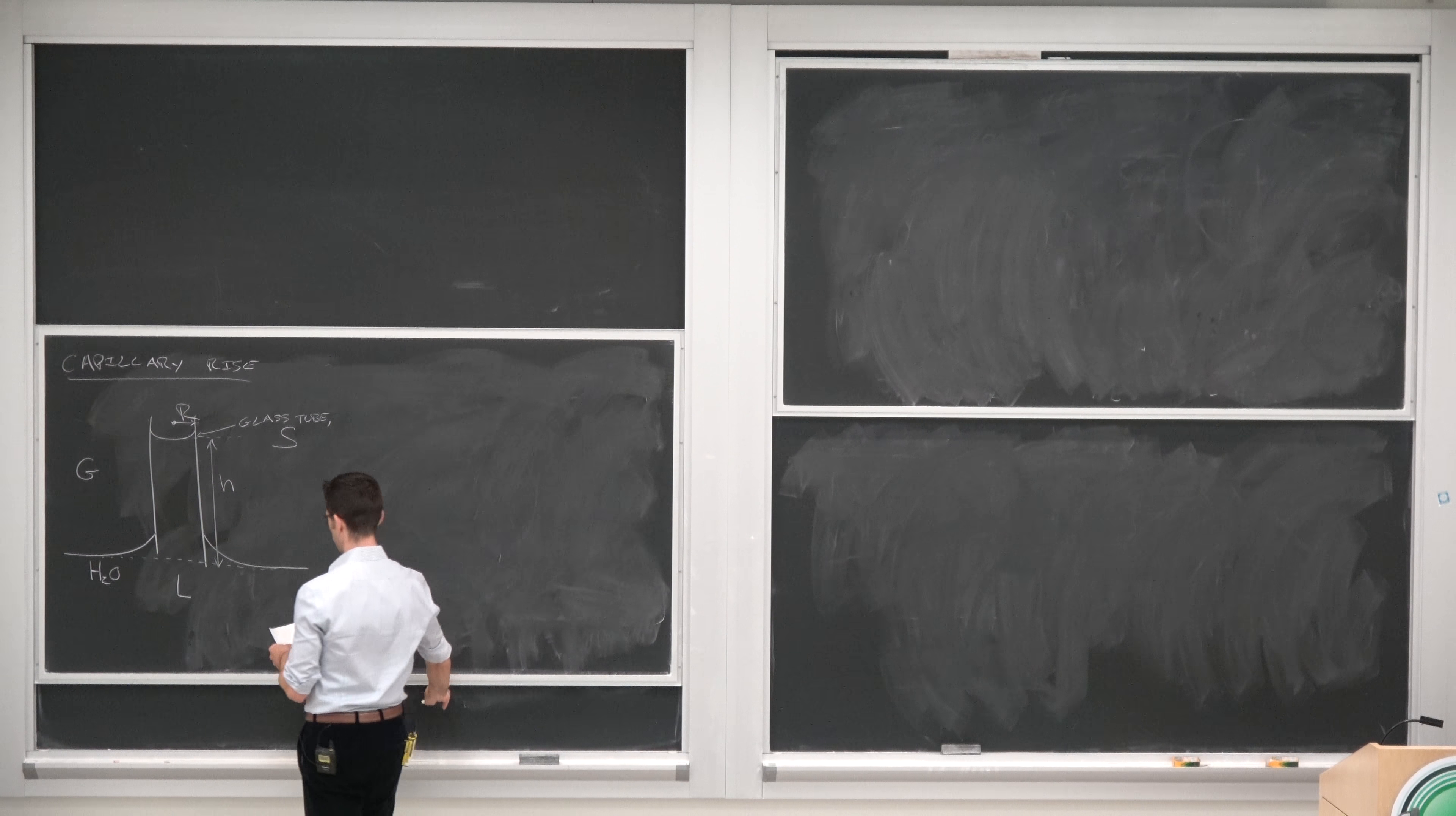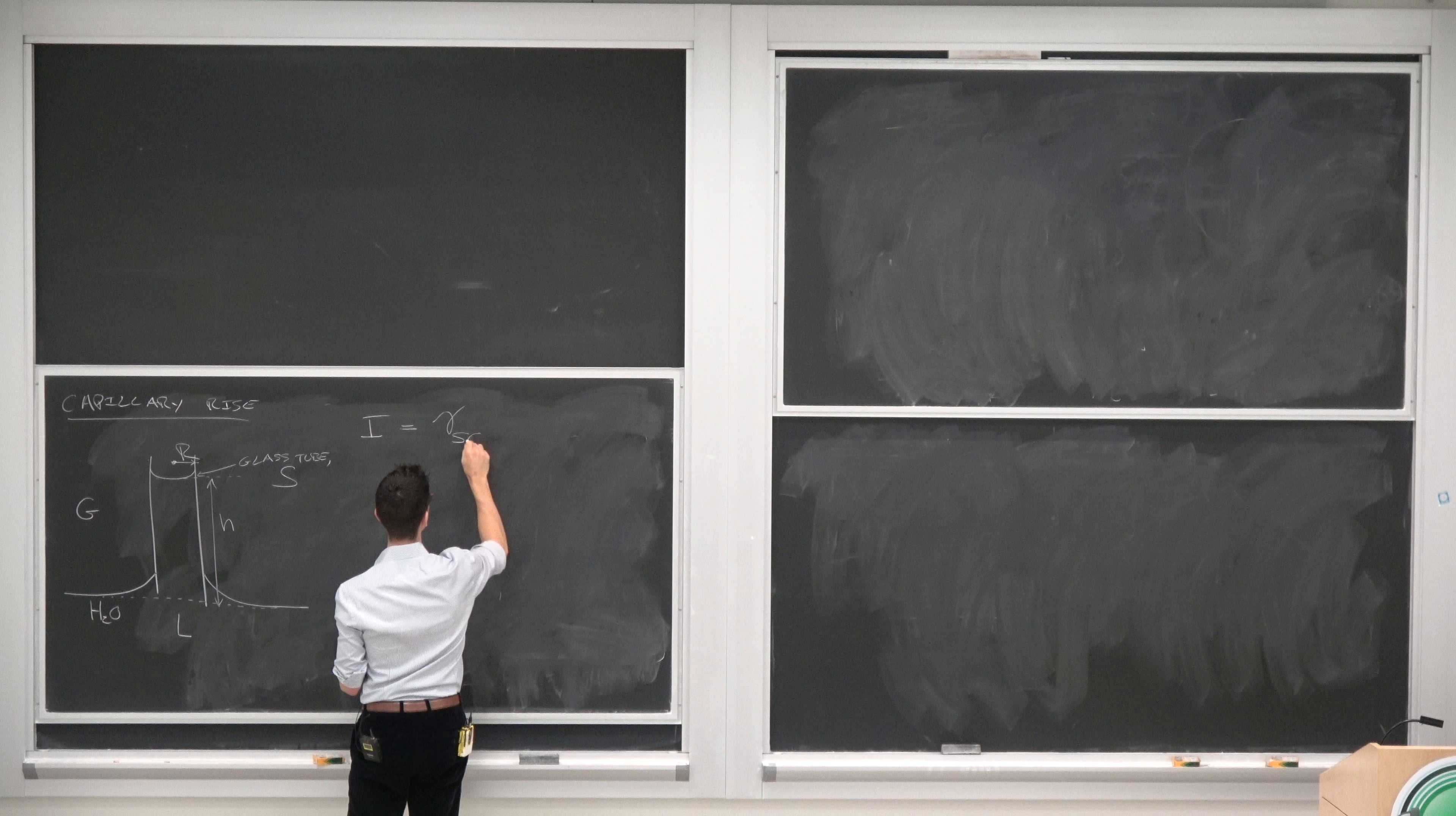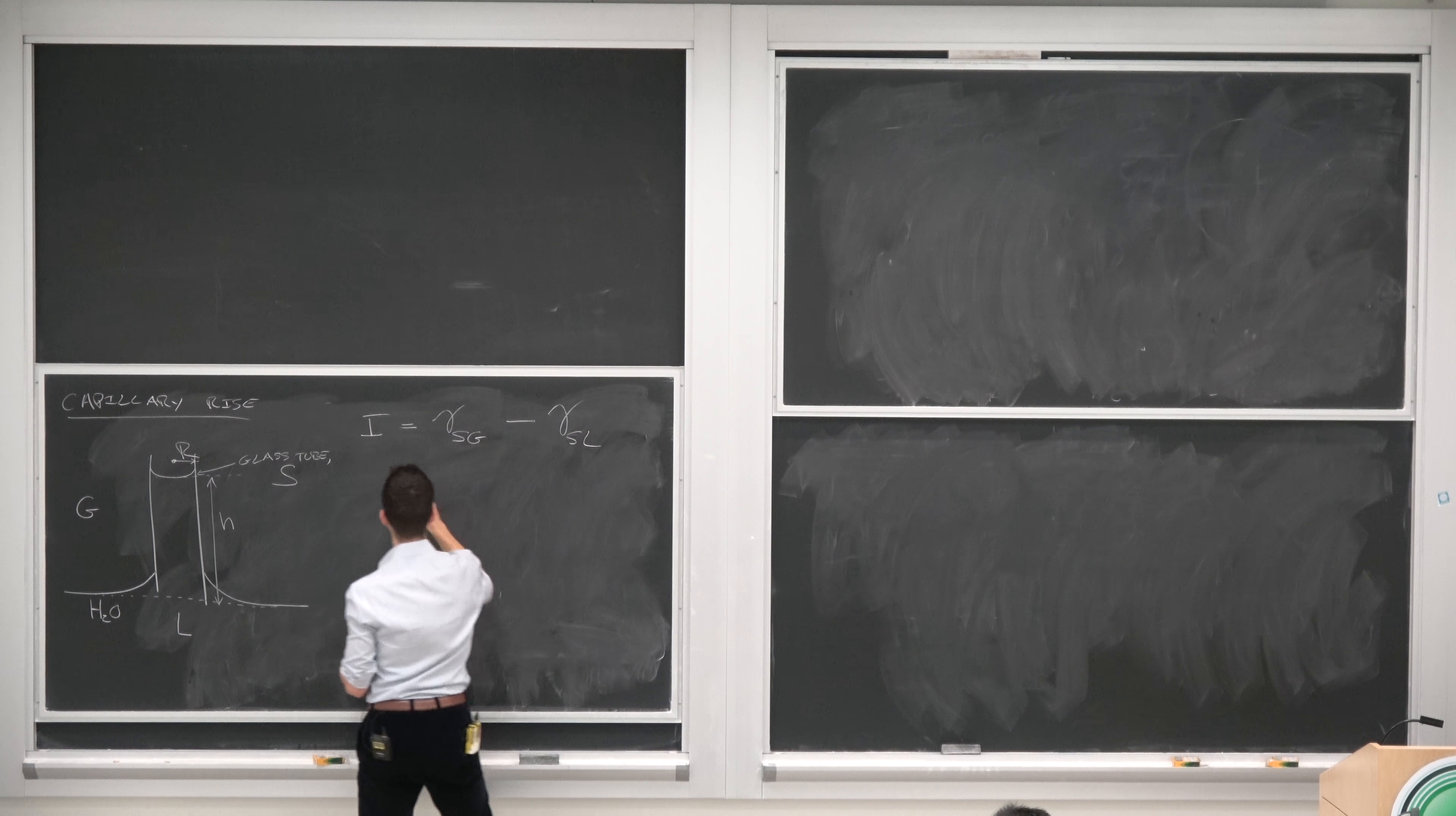We're going to define some quantity called I, the imbibition parameter, which I will write in a moment. It's the thirsty parameter.